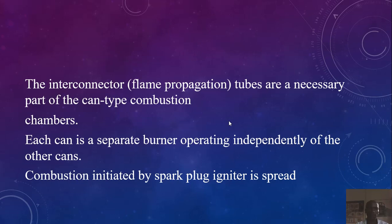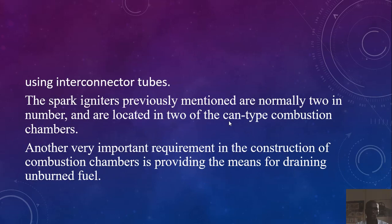Each can is a separate burner operating independently of the other cans. Combustion is initiated by spark plug igniters, and the flame spreads. The spark igniters are normally two in number, located in two of the can type combustion chambers. The rest of the chambers receive the ignited flame via interconnector tubes.